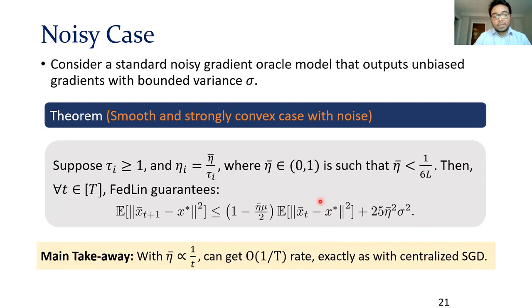Our analysis also goes through for a standard stochastic oracle model, and we get a O(1/T) rate exactly as with centralized GD. We have several additional results for the convex and non-convex settings, and also for gradient sparsification, for which I'll refer you to the paper.